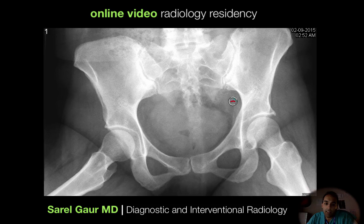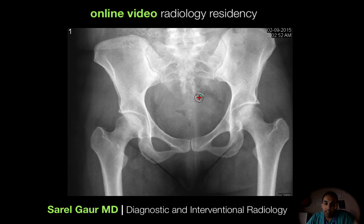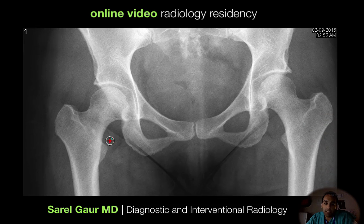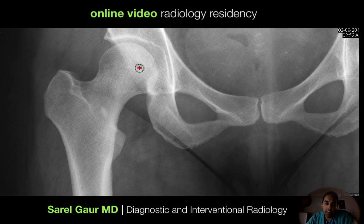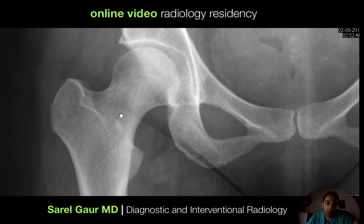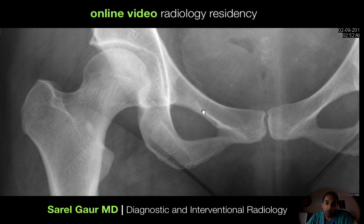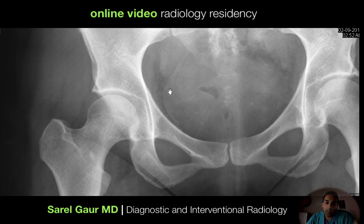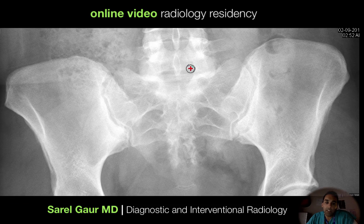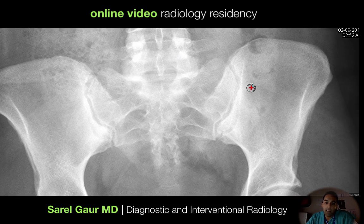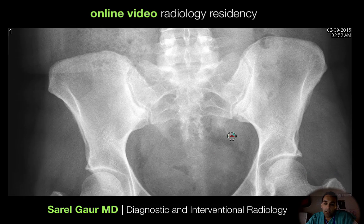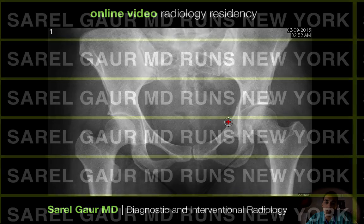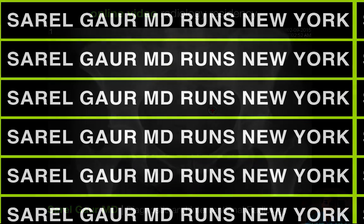That's kind of how I look at this type of study — I basically go step by step. I zoom in to get good spatial resolution and a good understanding of the bone, and I go in order: coming around the femur and pubic rami, then up around the iliac bones, into the sacrum, and making sure I check the lumbar spine. If you do that, you should pick up most of the clinically significant fractures on AP of the pelvis. I hope this video was helpful — thank you for your time.